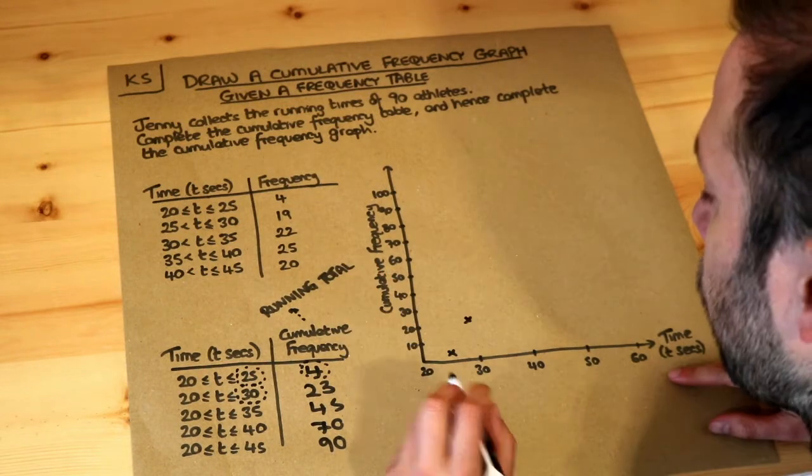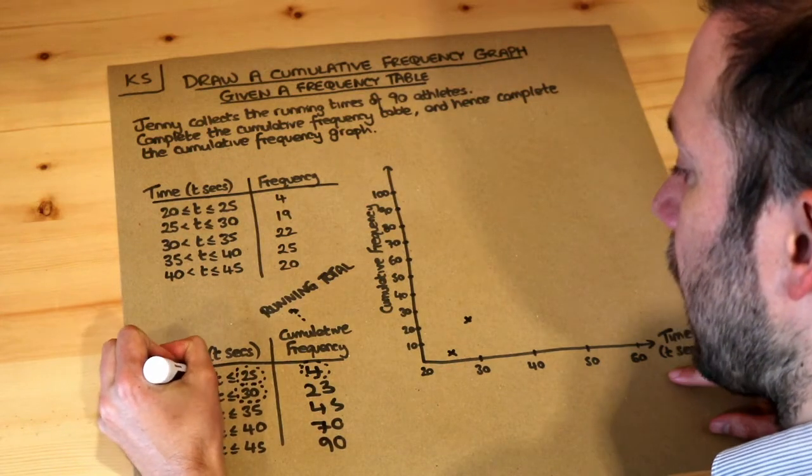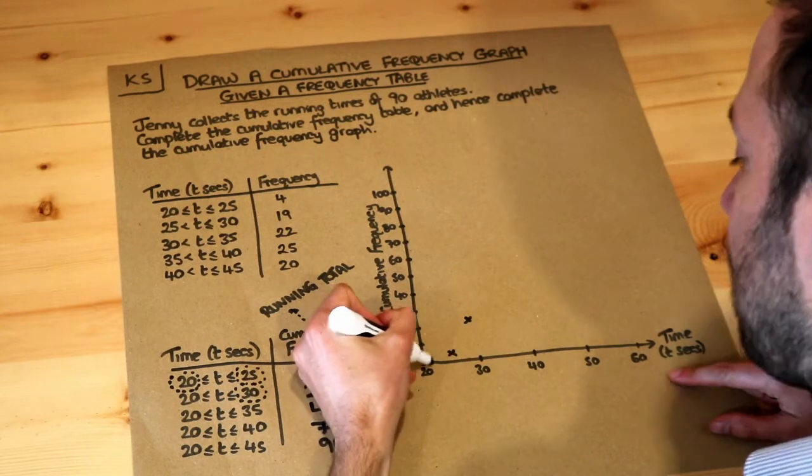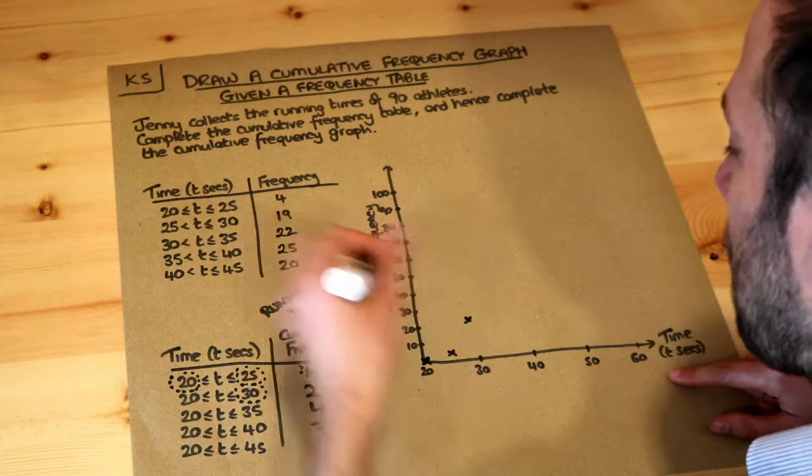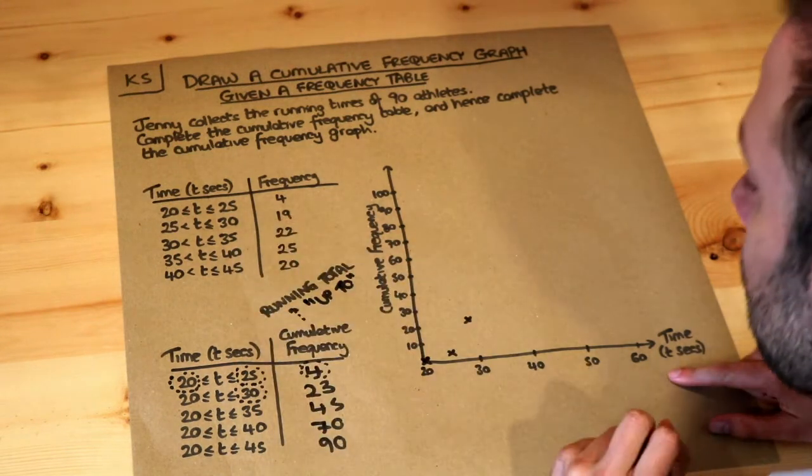Note also that we need a first value, we know that no one had a time of up to 20 seconds so we can put 20, 0 to say that no one had a time of up to 20. Remember the key words here are up to, those are the kind of magic words with a cumulative frequency graph.